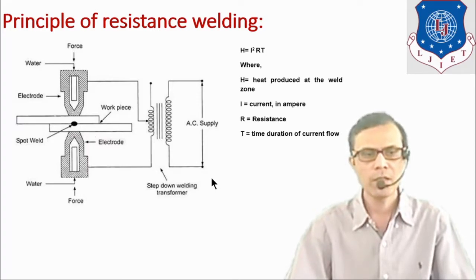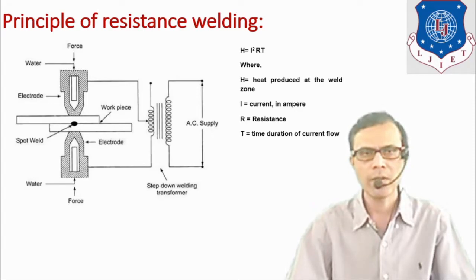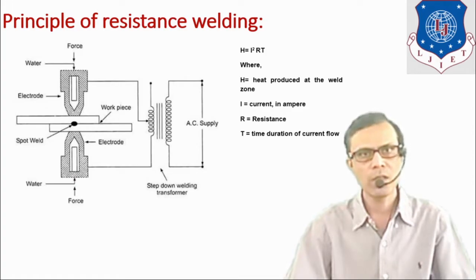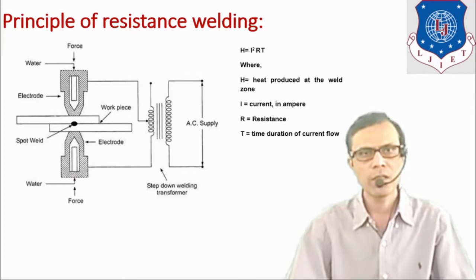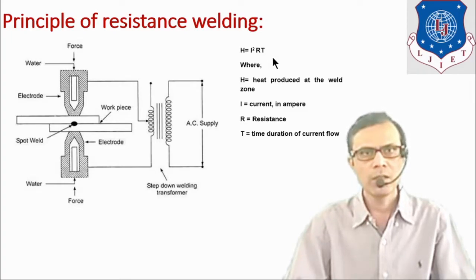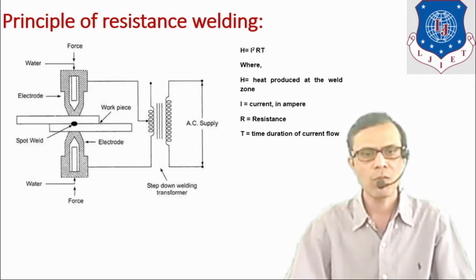Let us see in detail what is the principle of electrical resistance welding. AC supply is used because it can be transformed into high or lower voltage as per the requirement using a transformer. The basic principle is based on the equation H = I²RT.